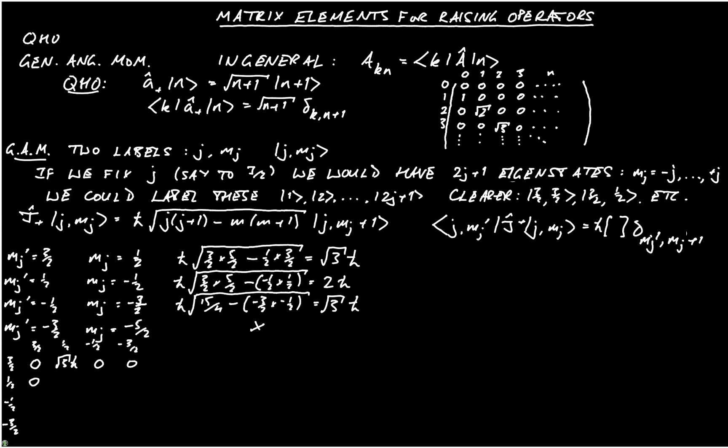For mj prime is a half, we get 0, 0, 2 h-bar, 0. For mj prime is minus a half, we get 0, 0, 0, and then root 3 h-bar. And on the bottom line, we get 0s all the way across, because there is no condition for which mj prime is equal to mj plus 1. So we've created the matrix representing the raising operator for angular momentum.